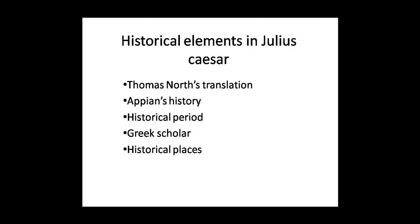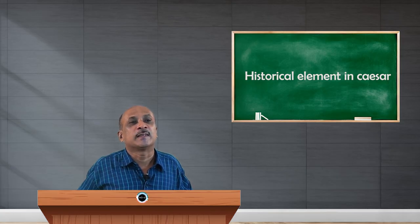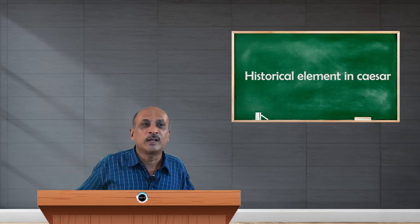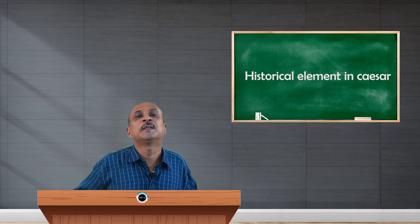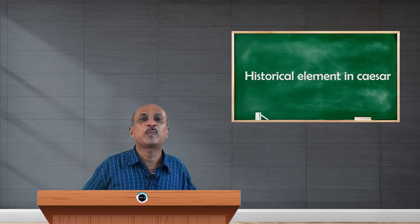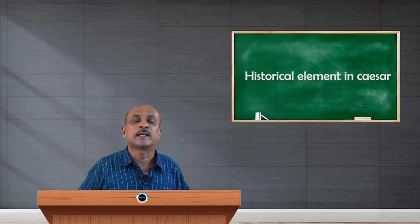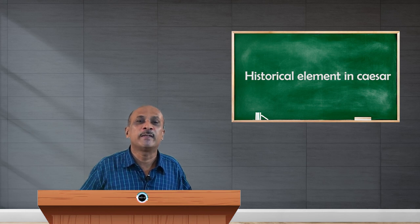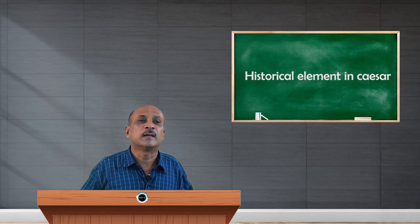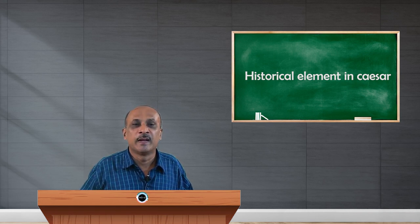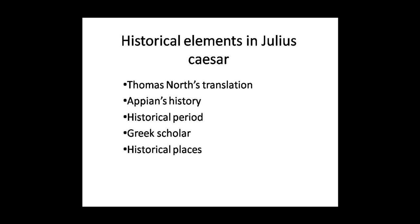These are the accounts we see when we look at the historical elements in Julius Caesar. Apart from that, characters like Mark Antony and Octavius Caesar are true historical living characters of Julius Caesar's time, and they played a significant role in Roman history when Julius Caesar was the emperor of Rome.